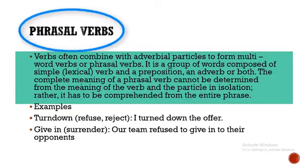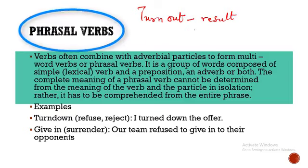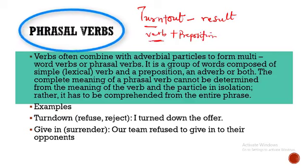When a verb and a preposition combine together, they give a completely different meaning. It does not have the same meaning as the original verb. For instance, 'turn' means to move, but 'turn out' means results — it's different from the base verb. This is the combination of verb plus preposition.